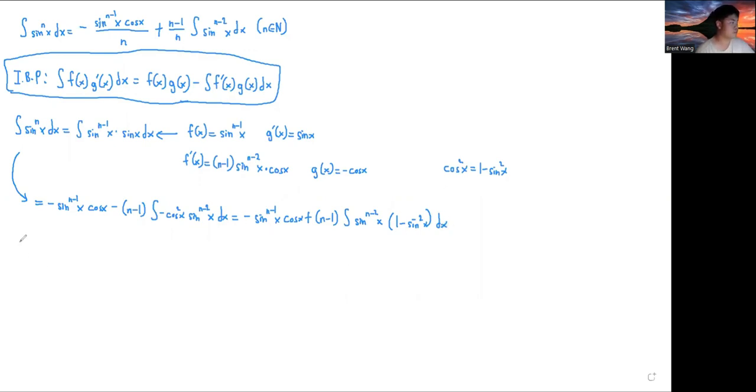And we can distribute this out. So this is equal to negative sine n minus 1 x cos x plus n minus 1 sine n minus 2 x dx, and then minus n minus 1 sine n minus 2 times sine squared, that's just sine n x dx.